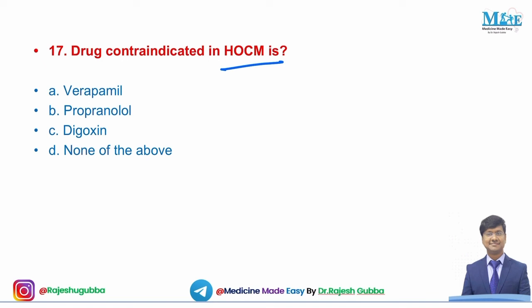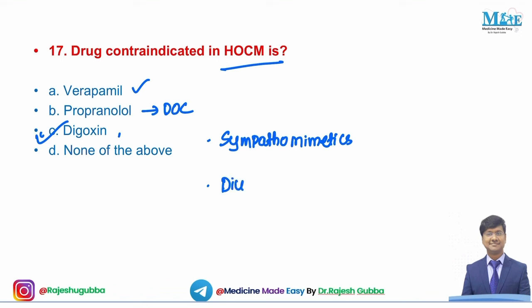Next question: the drug contraindicated in HOCM — verapamil, propranolol, digoxin, or none of the above. The drug contraindicated in HOCM is digoxin. The drug of choice in HOCM is beta-blockers, with verapamil as an alternative. Contraindicated drugs include digoxin, sympathomimetics, diuretics, and nitrates — all of which increase obstruction and reduce cardiac output.